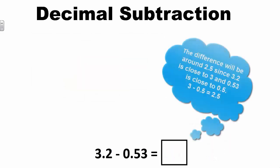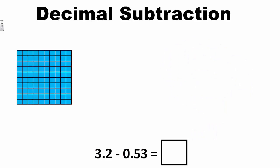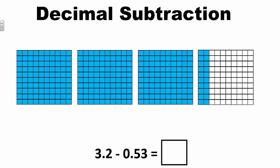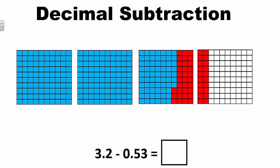Let's look at an example of 3 and 2 tenths minus 53 hundredths. We can model this problem using a pictorial representation showing 3 ones and 2 tenths. I need to subtract 53 hundredths from the representation. The red on the screen represents the 53 hundredths being subtracted from 3 and 2 tenths. Counting the blue blocks that remain, the model shows there are 2 and 67 hundredths left. So, 3 and 2 tenths minus 53 hundredths equals 2 and 67 hundredths.